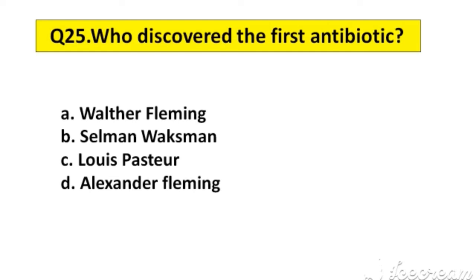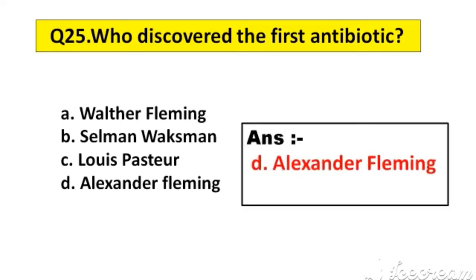Question number 25. Who discovered the first antibiotic? A. Walther Flemming, B. Selman Waksman, C. Louis Pasteur, D. Alexander Fleming. The right answer is option D, Alexander Fleming.